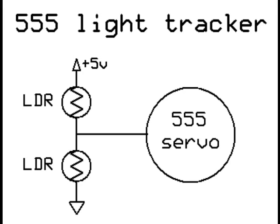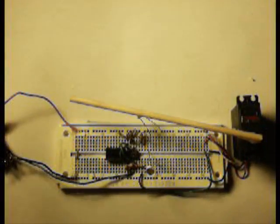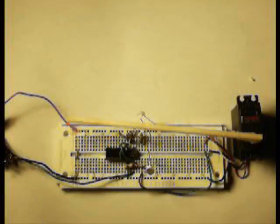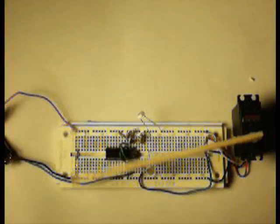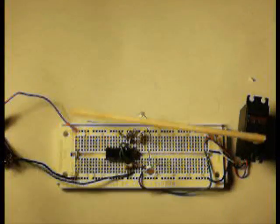And if you add a couple little light sensors like this as a voltage divider, what you'll get is a light tracking servo system, so you can use this for solar cells or whatever. You can see the stick interfering with the sensor at the bottom.